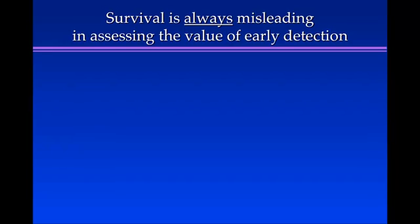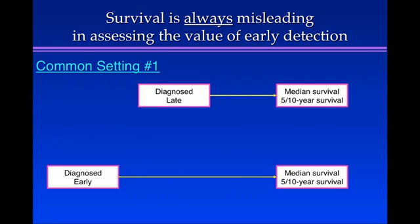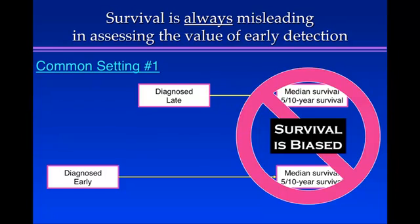Now survival is always misleading in assessing the value of early detection. The first common setting is comparing patients who are diagnosed late with patients who are diagnosed early. If they're followed forward in time and you measure median survival or 5- or 10-year survival, survival is misleading. Of course patients diagnosed early survive longer. Epidemiologists would say survival is biased — biased means misleading.